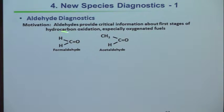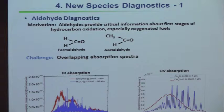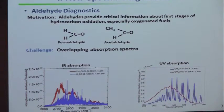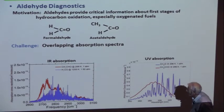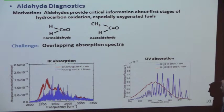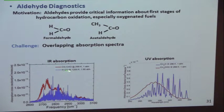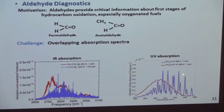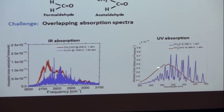The problem with these aldehydes is that they have overlapping spectra. Formaldehyde's spectrum overlaps with acetaldehyde's. When you have that problem, you use multiple wavelengths. We look at the infrared absorption spectrum that combines these two species. The acetaldehyde appears at around 300 cm⁻¹. We use FTIR, sometimes at room temperature. There's also overlap in the UV. But small-molecule formaldehyde has a discrete structure, whereas acetaldehyde — being a bigger molecule — has more of a continuum structure.